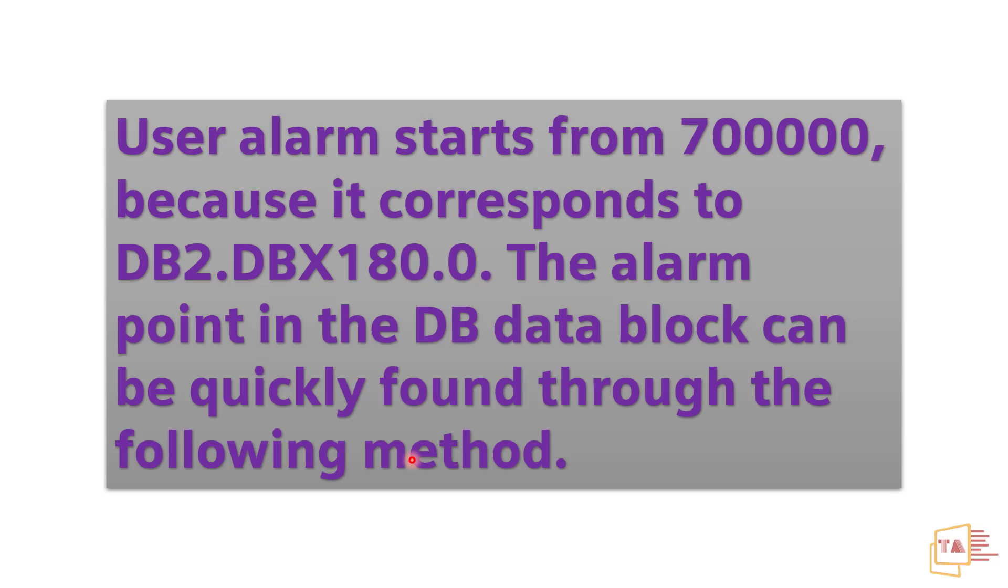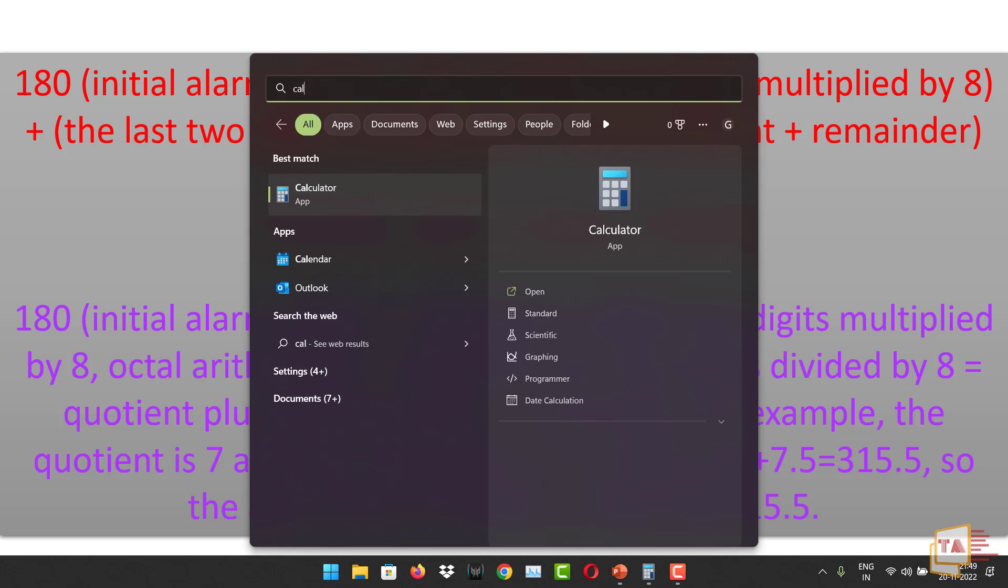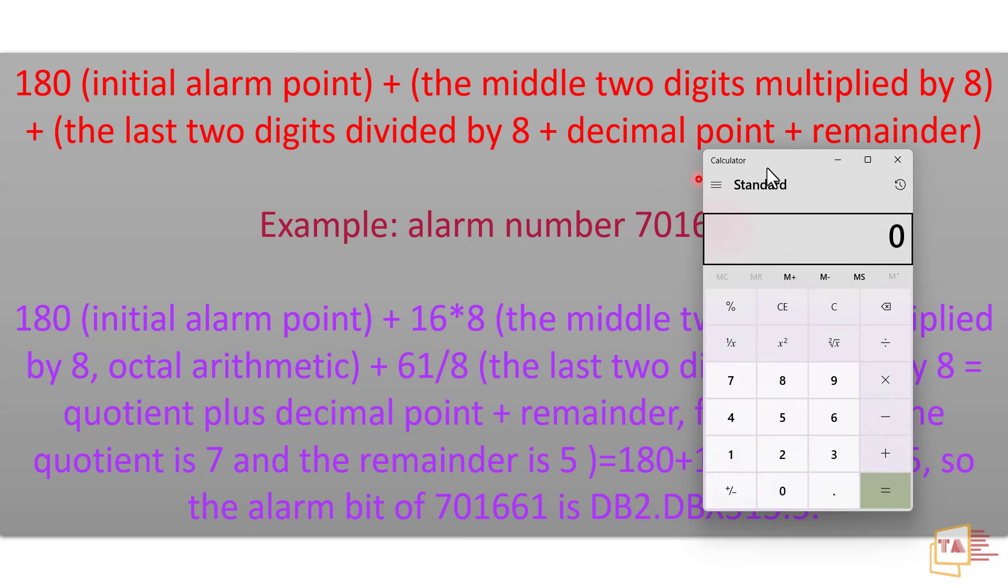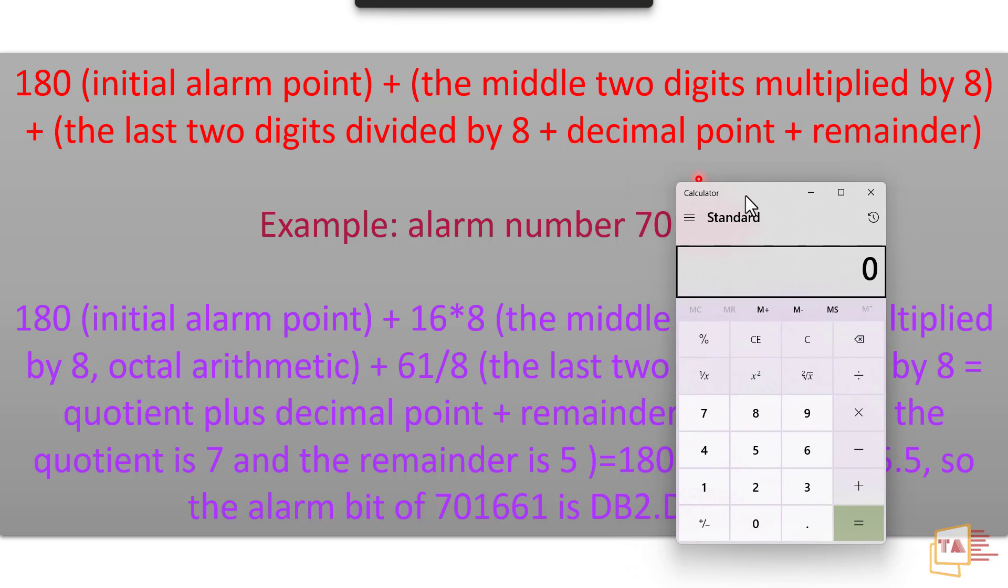So now I'm going to tell you the method that is going to save your time while troubleshooting the cinematic alarms, PLC based alarms. For example, the alarm number is 701661. Open your calculator. I'm just going to do some maths right now. This is not going to be tough, it is going to be very simple. Everyone can use this method.